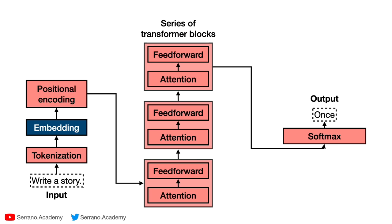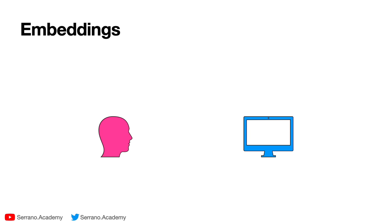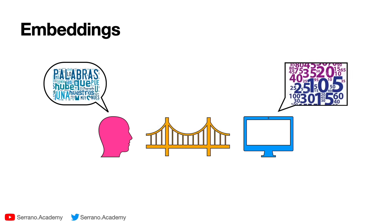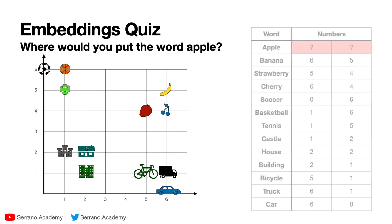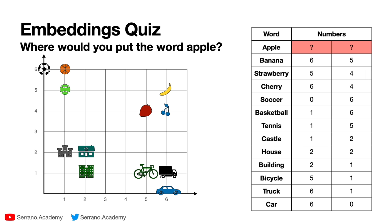The next step is embeddings. Embeddings are the most important part of a large language model — it's really where the translation happens from humans who speak in words to computers who speak in numbers. The stronger this bridge is, the better large language models are. Recall the quiz: where would you put the word 'apple' in an embedding space? Given fruits and computer-related words, the answer was C — around the fruits, at coordinates (5, 5). Similar words get sent to similar numbers, and the embedding is a description of the word where every coordinate means something.